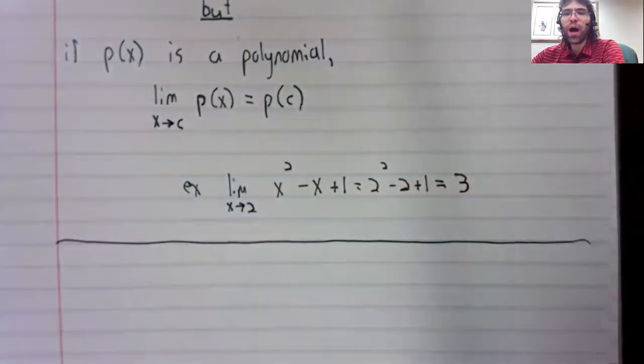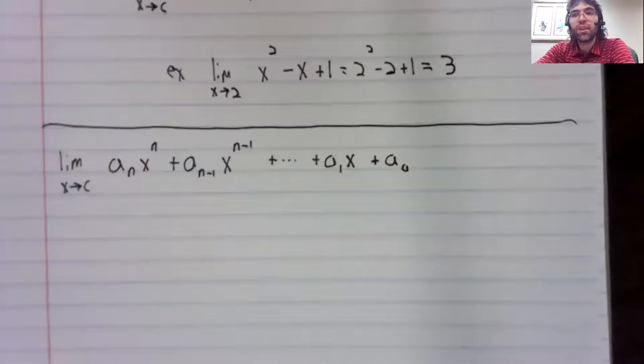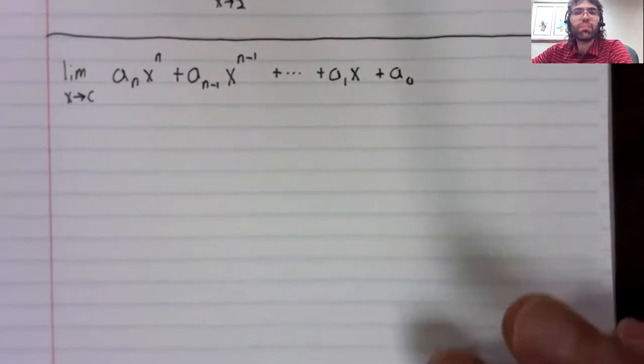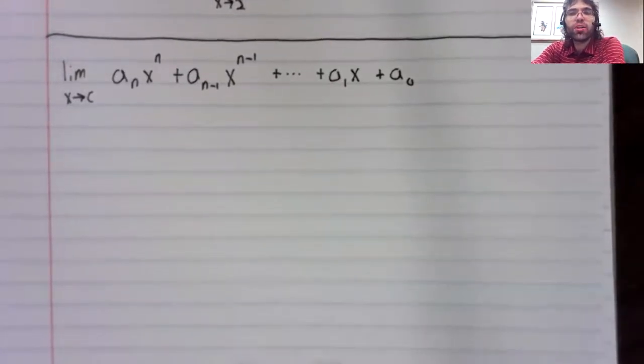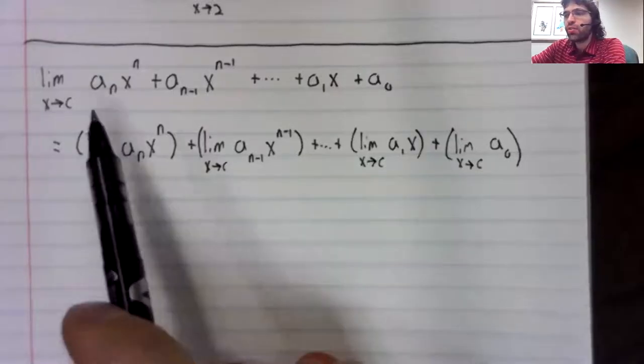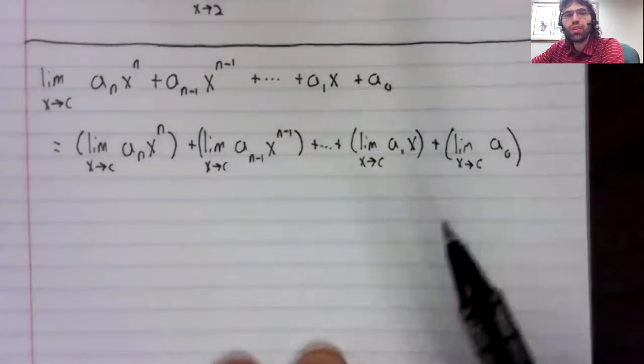Why is this true? Well, suppose you have the limit of a polynomial. According to the sum rule, we can break the limit of a sum up as the sum of limits.